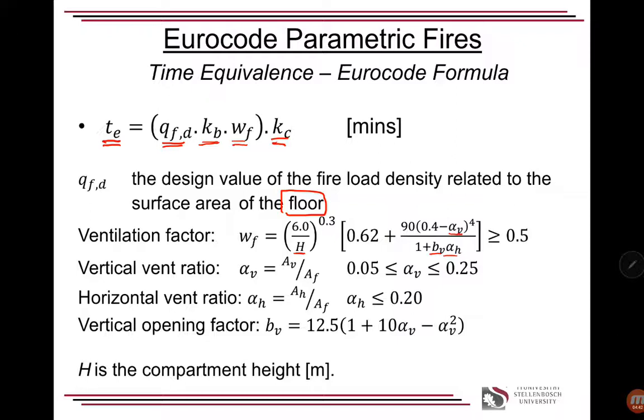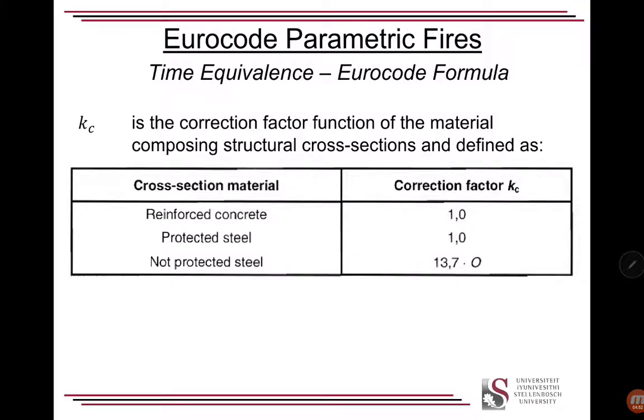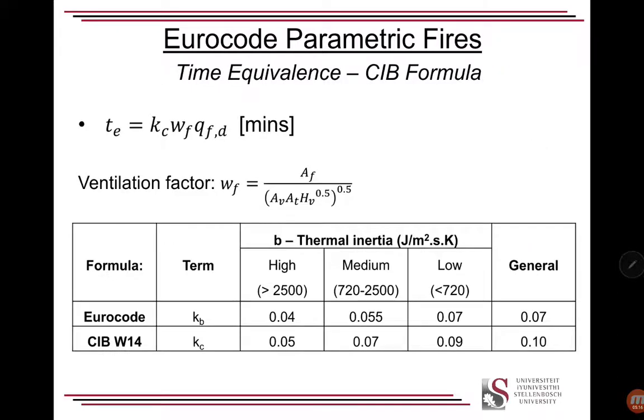And then we've got a vertical opening factor. And you'll once again see that this is quite an empirical factor to adjust. So this is based upon testing and some curves are being fitted. And you always should be cautious of applying empirical equations without understanding where they come from. We've got a kc, a correction factor, which is a function of the material composing structural cross-section and defined as: if you've got one for reinforced concrete and protected steel, and then if it's not protected, so you've got a function of the ventilation area O. So we need to adjust our equation using those.